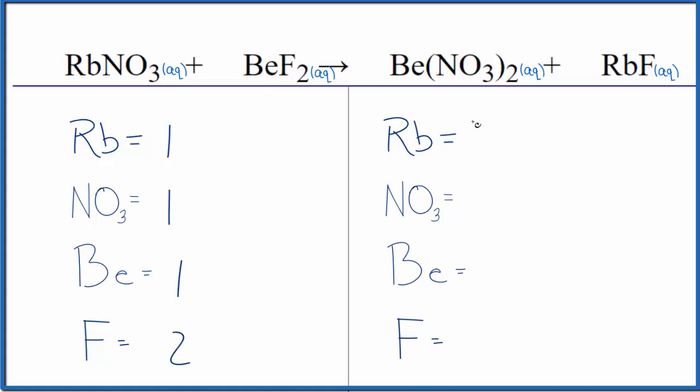Products, we have one rubidium. We have one nitrate times two, so we have two nitrates in the products, one beryllium and one fluorine atom. This makes it nicer when we count the nitrates that way.